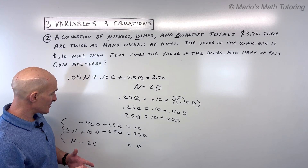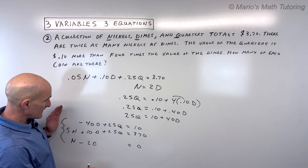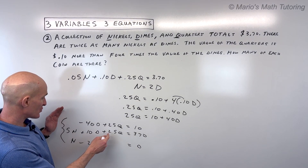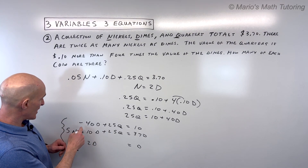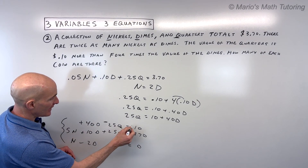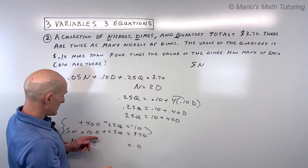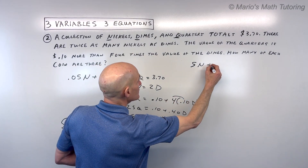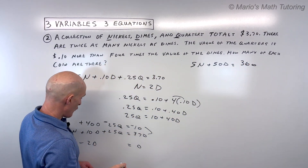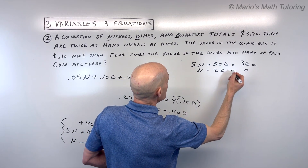To eliminate the q's, multiply the third equation (negative 40d plus 25q equals 10) by negative 1, giving 40d minus 25q equals negative 10. Adding to 5n plus 10d plus 25q equals 370 cancels the q's, giving 5n plus 50d equals 360. Combined with n minus 2d equals 0, we're down to two variables.